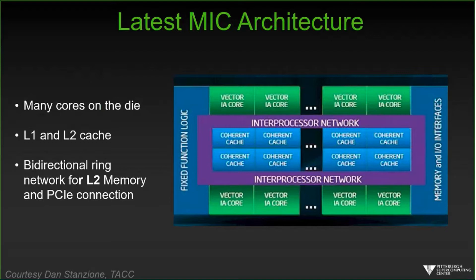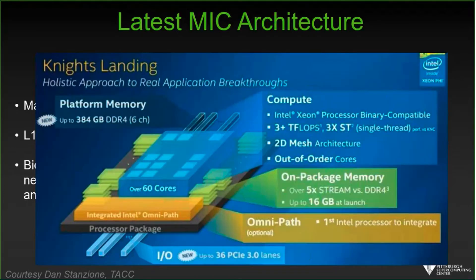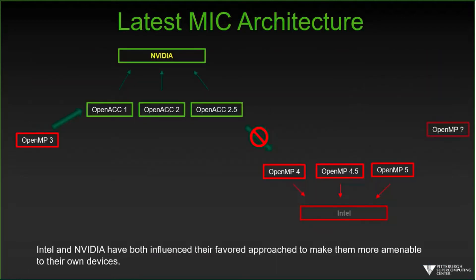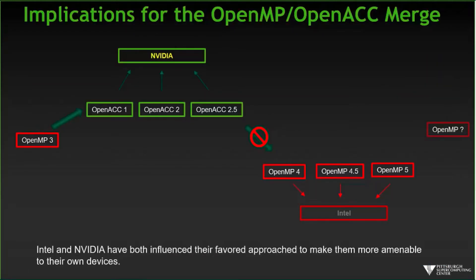The next serious generation, Knight's Landing, has 60-some cores arranged in a tile — they've given up the ring bus in favor of a tile-type architecture. These are simpler processors arranged in a 2D mesh sharing memory, something like an SMP cluster on a chip. The implications for OpenMP are that Intel, with a strong influence on the OpenMP standard, has found it may be to their competitive advantage to make OpenMP work particularly well with Intel chips.